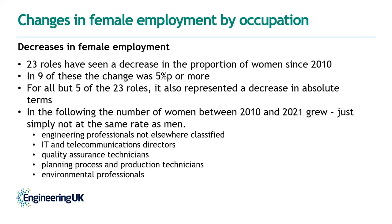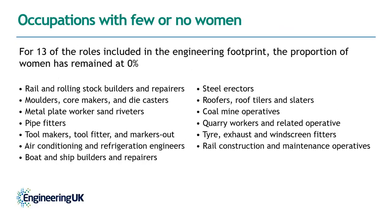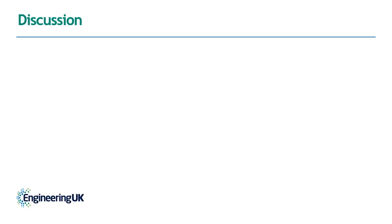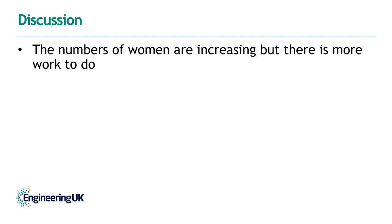The five exceptions are roles where the number of women grew between 2010 and 2021, just not at the same rate as men. Finally, for 13 roles in the footprint, the proportion of women has remained at 0% — virtually no women are in these professions in 2010 and that's remained the case 11 years later. It's worth noting that for the majority of these roles the overall size of the workforce has shrunk, but to have no women in them at all is a reminder of the large gender gap in engineering.